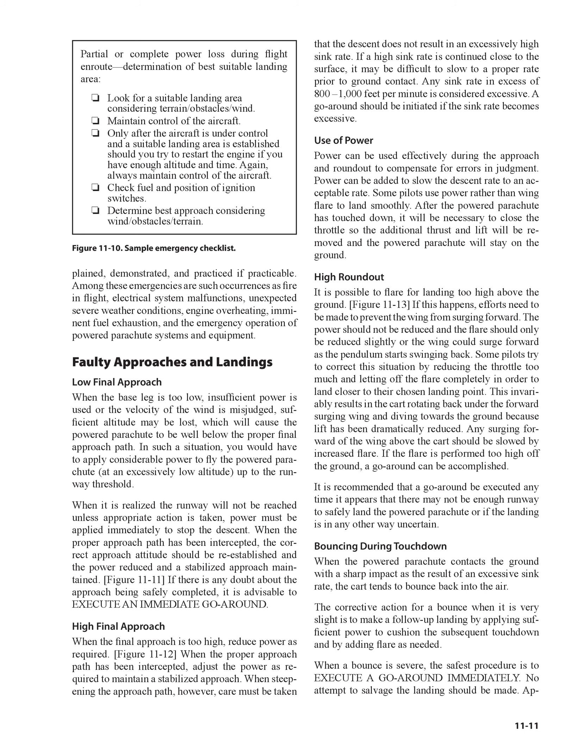High Final Approach: When the final approach is too high, reduce power as required (Figure 11-12). When the proper approach path has been intercepted, adjust the power as required to maintain a stabilized approach. When steepening the approach path, however, care must be taken that the descent does not result in an excessively high sink rate. If a high sink rate is continued close to the surface, it may be difficult to slow to a proper rate prior to ground contact. Any sink rate in excess of 800–1,000 feet per minute is considered excessive; a go-around should be initiated if the sink rate becomes excessive.